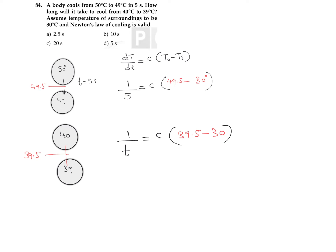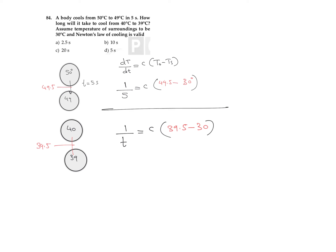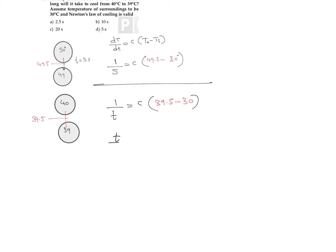Dividing the two equations so that the constant c cancels, we get: t/5 = 19.5 / 9.5. Solving for t gives approximately 10.26 seconds, which is close to 10 seconds.